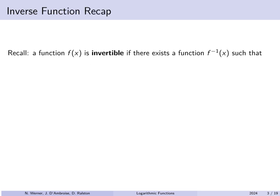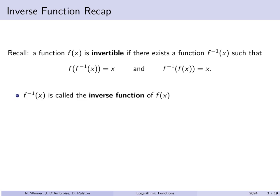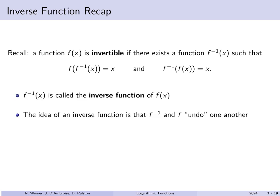Remember, we've already introduced the notion of an invertible function. A function is invertible if there is a function that we call f inverse of x. Remember, that is not 1 over f of x — it's not the best notation, but it's what we use. We call this the inverse function, f inverse of x, such that the composition f of f inverse of x will always produce x. If you plug any x into f and then plug that result into f inverse, you end up with the number you started with. So f inverse is called the inverse function of f, and the idea is that they undo one another.